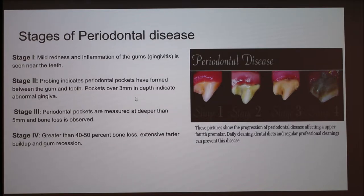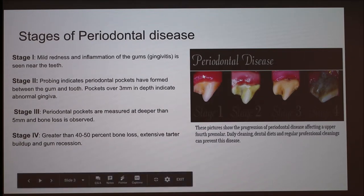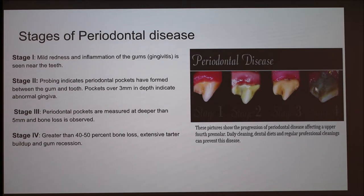Stage three: the periodontal pockets are measured at deeper than five millimeters and bone loss is observed. Stage four: it's greater than 40 to 50 percent bone loss, extensive tartar buildup, and gum recession. You can see the difference between the gums here and the large mass of brown and gray buildup.